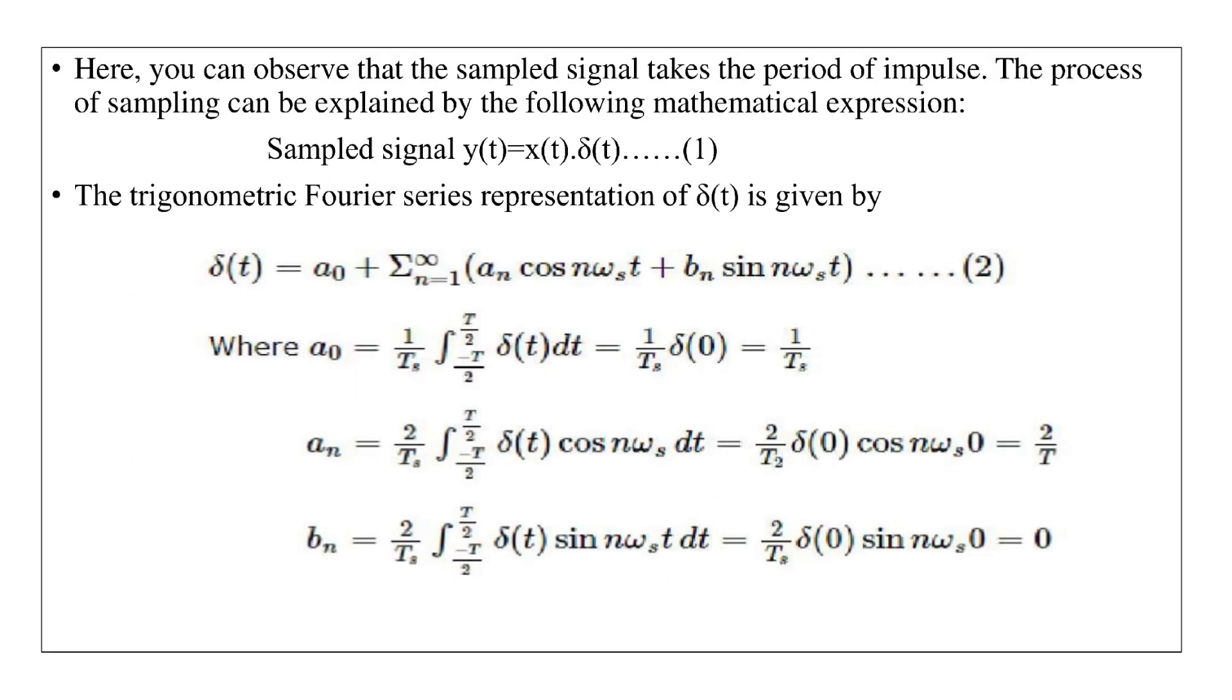Here, you can observe that the sampled signal takes the period of impulse. The process of sampling can be explained by the following mathematical expression: Sampled signal y(t) = x(t) · δ(t)...(1).